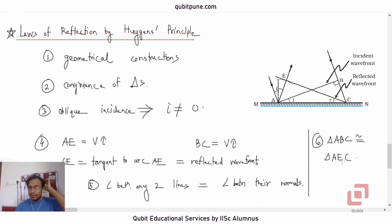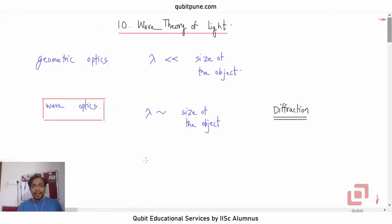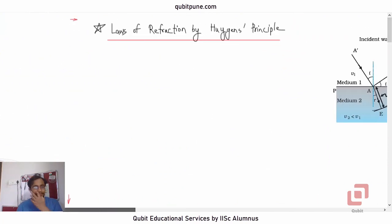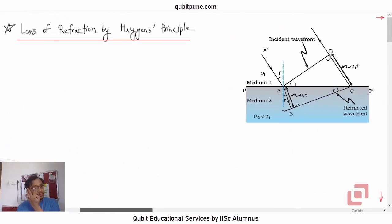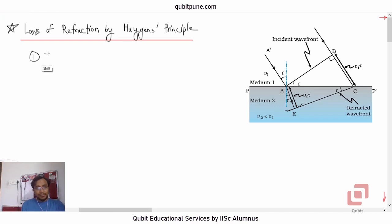You can go through the regular lecture notes to get the complete proof. Now let us go to laws of refraction by Huygens' principle. Here we also make use of geometry, but instead of congruence, we use right-triangle trigonometry.